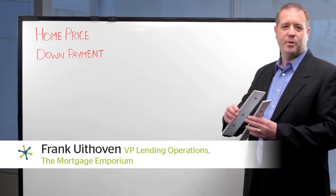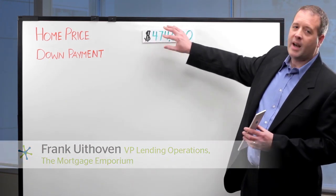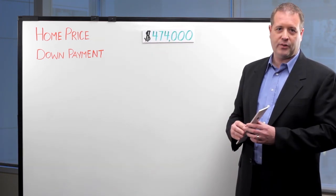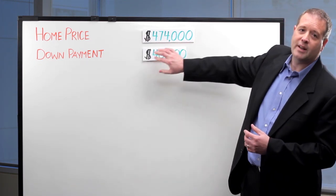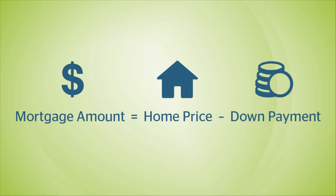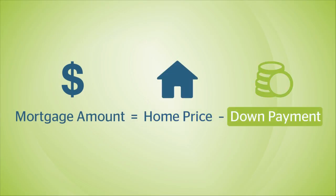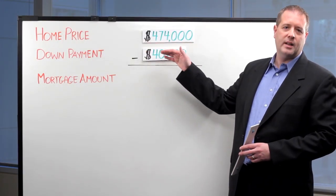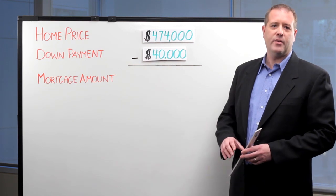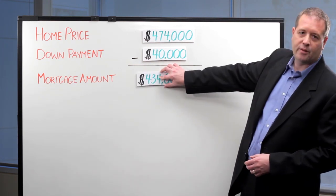For this example, let's say you've purchased a home for $474,000 and you've saved a down payment of $40,000 towards the price of your new home. First, you want to calculate what your new mortgage amount is going to be. To do that, it's your purchase price minus your down payment. So using our example, we take the home price less the down payment, which leaves us with a new mortgage amount of $434,000.